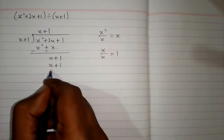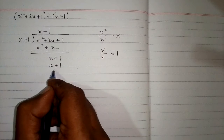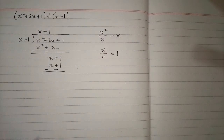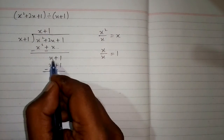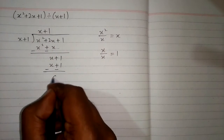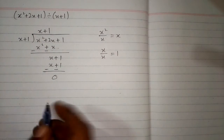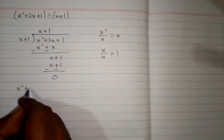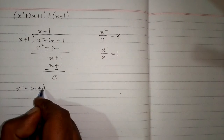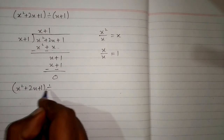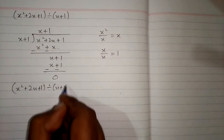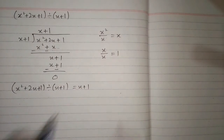Now we will subtract these polynomials. We will change the sign of the second polynomial. So x minus x is 0, and 1 minus 1 is 0. So x squared plus 2x plus 1 divided by x plus 1 is x plus 1.